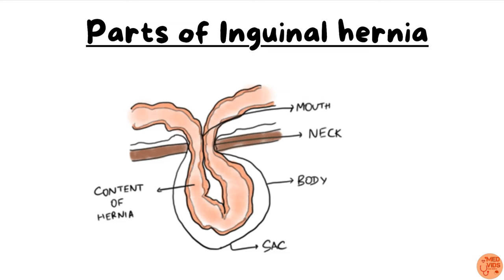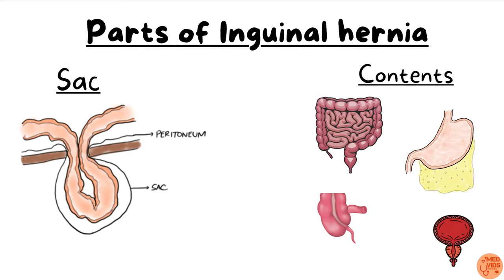Inguinal hernia has the following parts. The content which herniates often pushes the structures present in the anterior abdominal wall along with it as they come out. These structures pushed in front form the sac of the hernia. The major part of the sac is called the body; the narrowest part is called the neck; and the opening through which herniation occurs is called the mouth. The sac is usually made of layers of the abdominal wall pushed forward by protruding viscera such as the intestines. The contents of the hernia can be intestines, omentum, appendix, or even the urinary bladder.